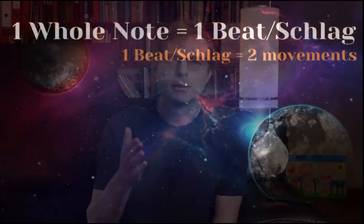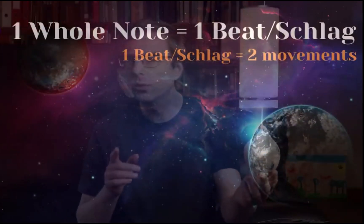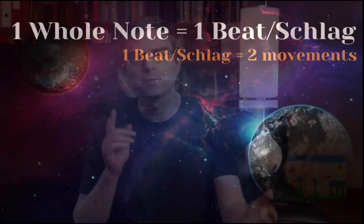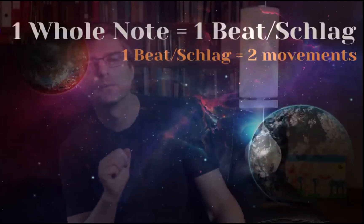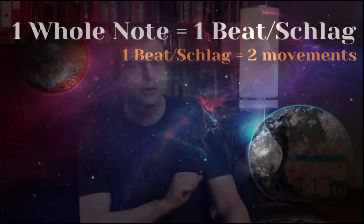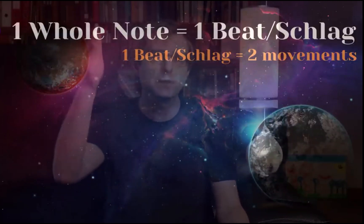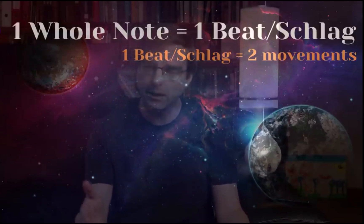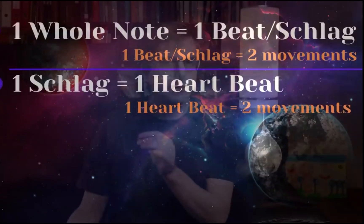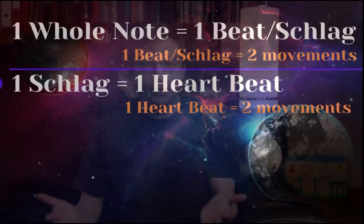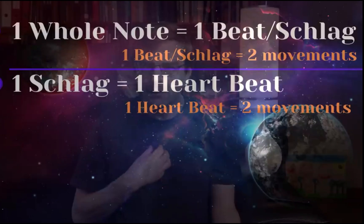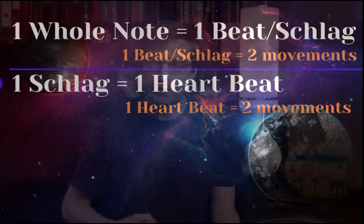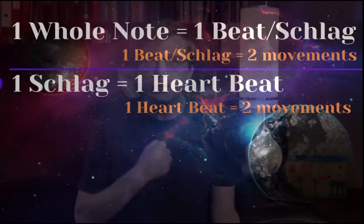Firstly, the semibreve or whole note is defined by one schlag or beat. Each schlag or beat consists of two movements: the up and down of the hand. Secondly, the schlag is set equal to the heartbeat — the pulse — also the heartbeat, that is a two-fold movement: systole, diastole.